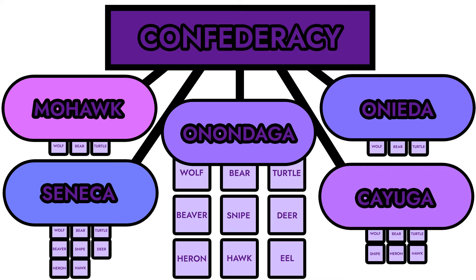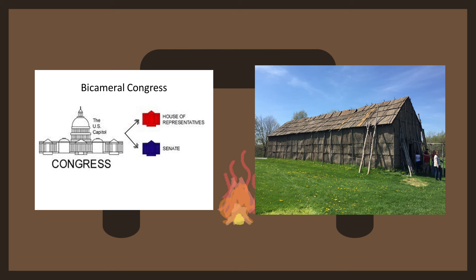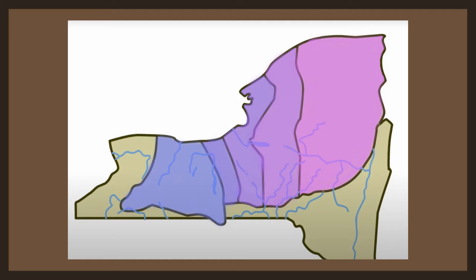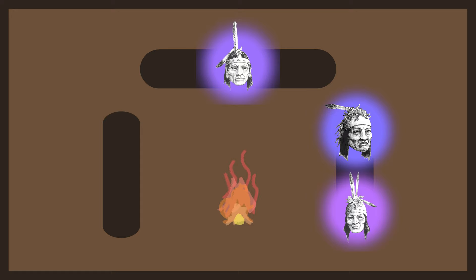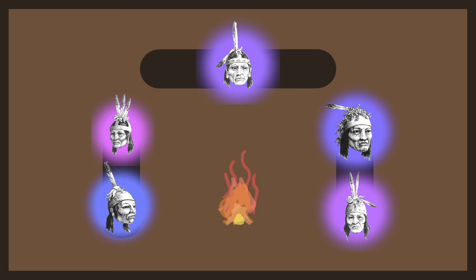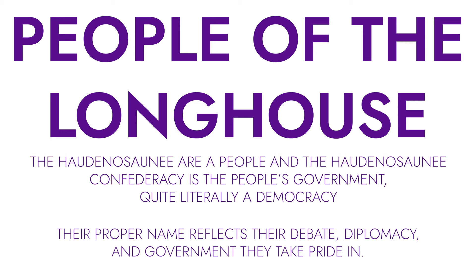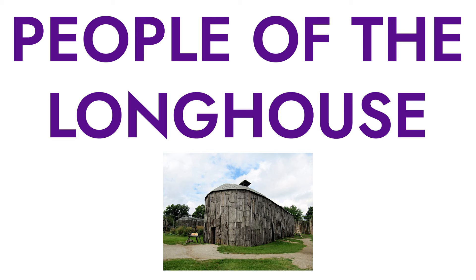We've seen how clans can form a nation, but how did the nations form the Confederacy on the administrative level? There were two main parts of their legislature in decision making. The first were the Mohawk and Seneca, the keepers of the eastern and western doors respectively. The second half, referred to as the Little Brothers, were the Oneida and Cayuga. The Onondaga were called the Central Flame — a central flame is the main place of heat in a longhouse, so calling the Onondaga this was representative of them being the heart of the Confederacy. The name Haudenosaunee actually means people of a longhouse, meaning that their proper name related to their diplomacy, statesmanship, and government, while also speaking of their culture. You could say that diplomacy, statesmanship, and government were their culture.